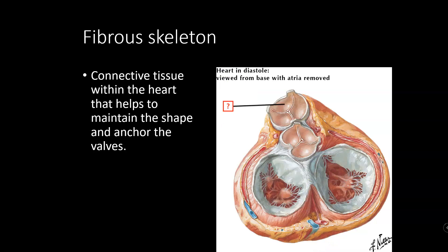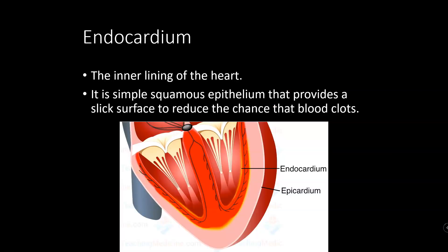The heart also has a fibrous connective tissue skeleton to help maintain the shape of the heart. It anchors the valves as well — you'll never see it because it's in between the muscle layer, but it is there. The endocardium is what lines the inner chambers, the atria and the ventricles. It is a nice smooth layer that helps make sure blood is not going to stick to anything or form clots inside the heart.